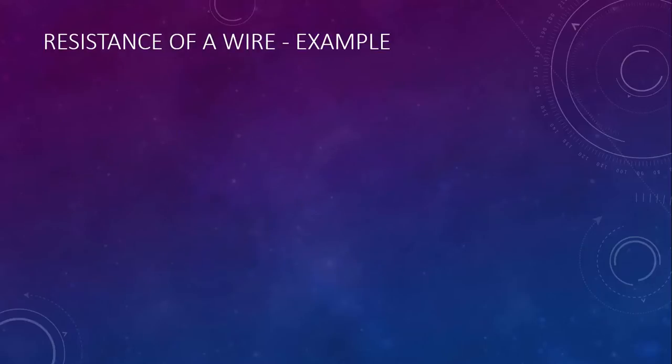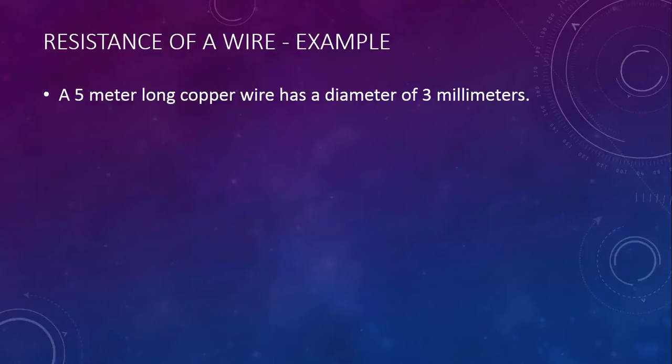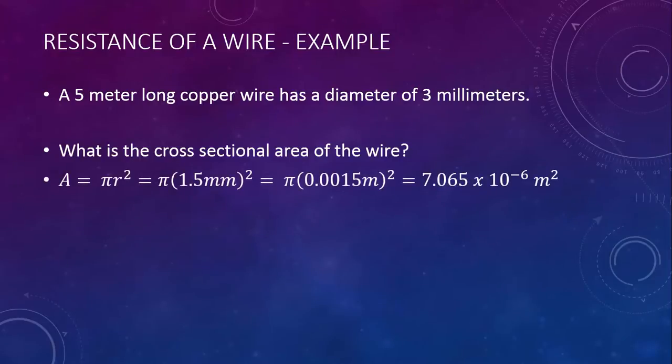Let's take a look at an example. A 5 meter long copper wire has a diameter of 3 millimeters. First, what is the cross-sectional area of the wire? Well, area is pi r squared, and radius is half of the diameter. So if the diameter is 3 millimeters, the radius is 1.5 millimeters. As always, we don't want millimeters, we want meters. We can change that to 0.0015 meters. When we square that and multiply by pi, we should get 7.065 times 10 to the negative 6 meters squared.